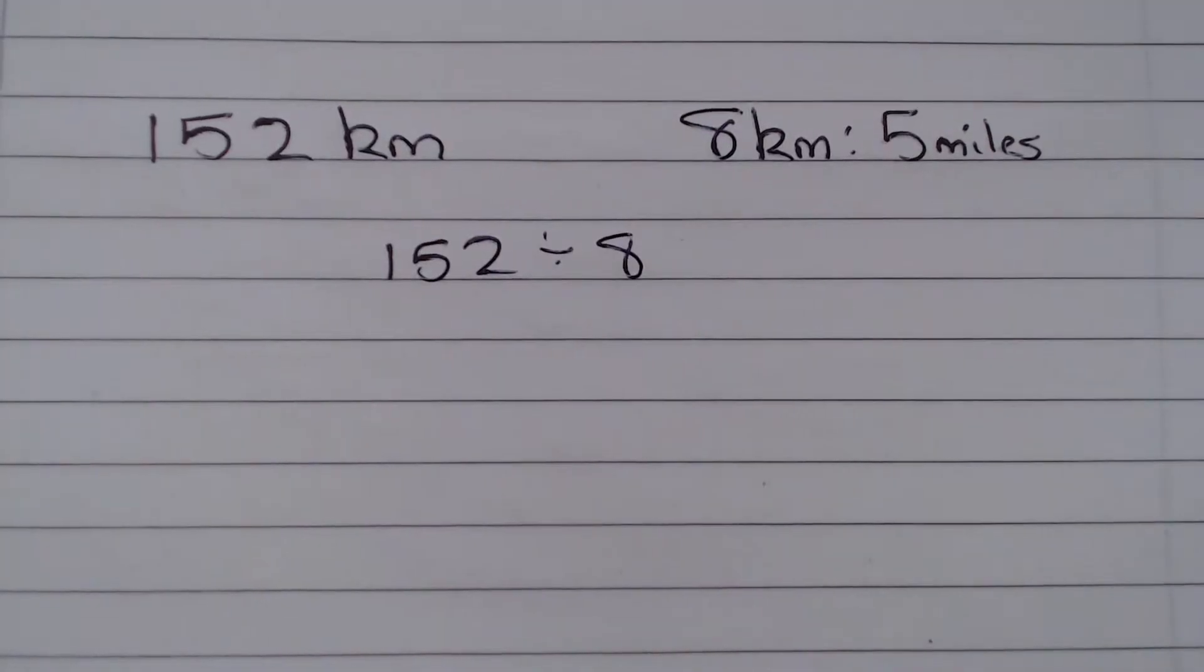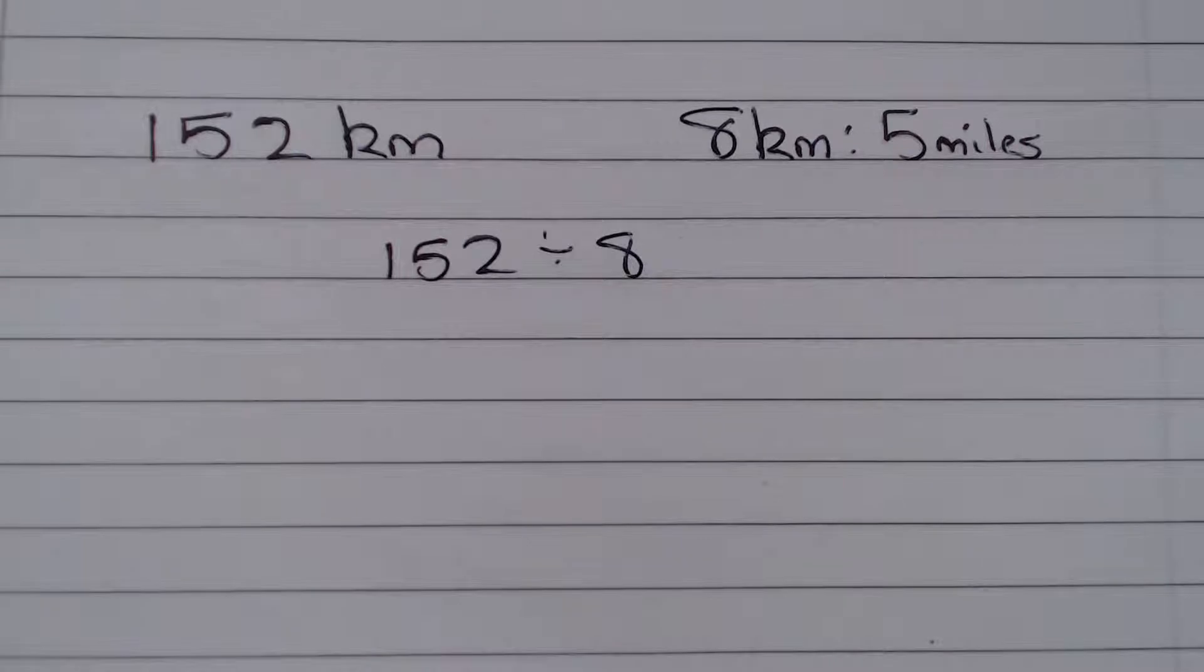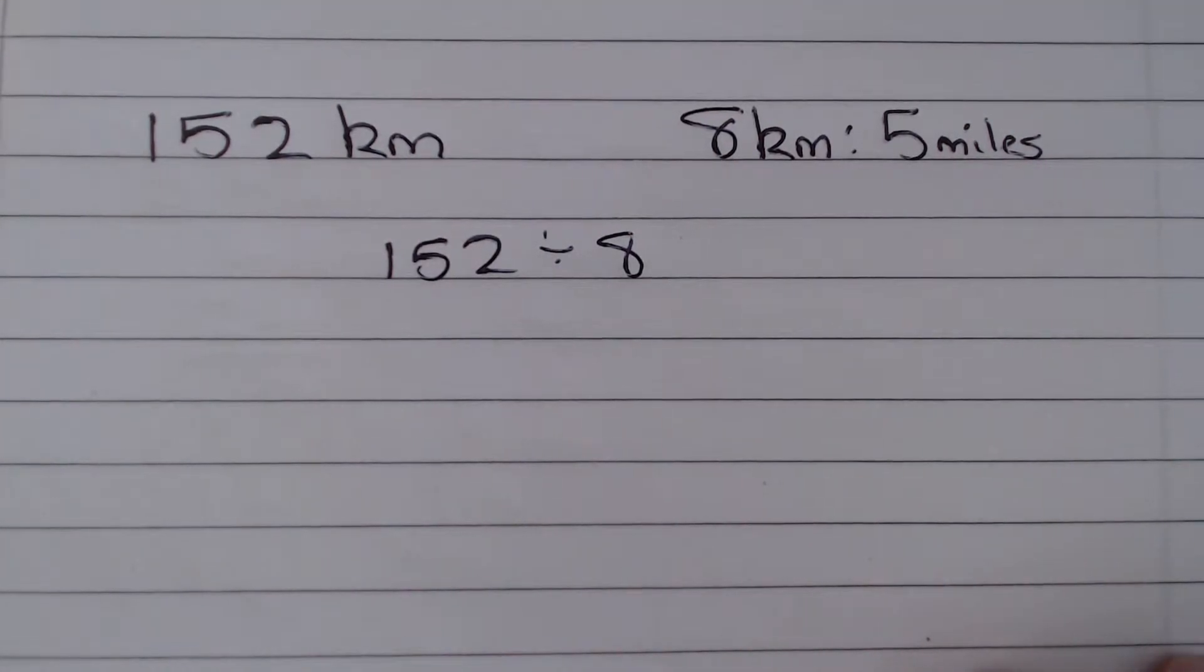Now there are two ways of doing this. Dividing by 8 is the same as dividing by 2 three times. So we could divide this by 2 three times. The other way we could do this is by long division.